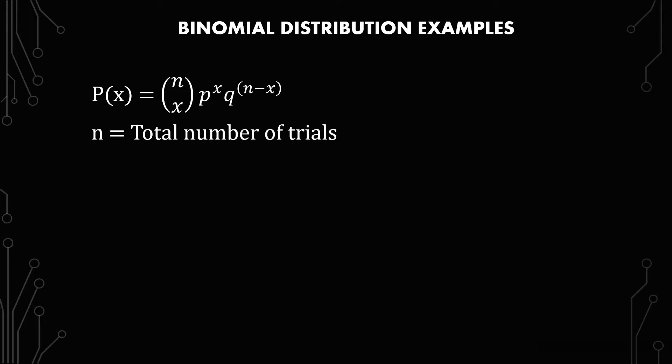n is the total number of trials. x is the number of successes. And to help with that, we also need to understand what the probability of success is.